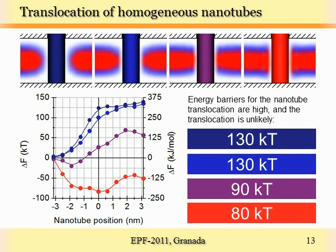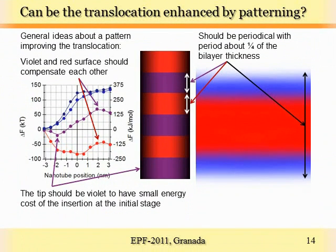We repeated this simulation with different hydrophobicities of the nanotube surface and with different diameters. Our general conclusion was that a nanotube with a homogeneous surface is not able to translocate through the phospholipid bilayer because it either gets stuck inside or cannot penetrate into it. We then asked: what happens if a nanotube has a patterned surface, perhaps because some biological molecules adsorb spontaneously on the surface and create patterns on it? Our ideas for the type of patterning that can enhance translocation are: it should consist of two types of surfaces with opposite energy contributions compensating each other; it should be periodic with a periodicity of about one quarter of the bilayer thickness; and the tip of the nanotube should be specially designed to minimize the energy change at the initial insertion.